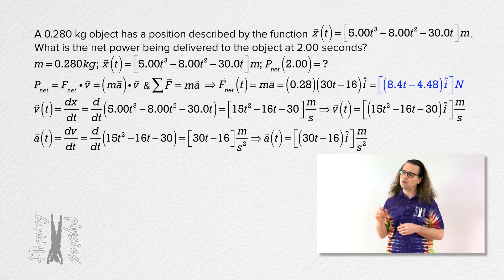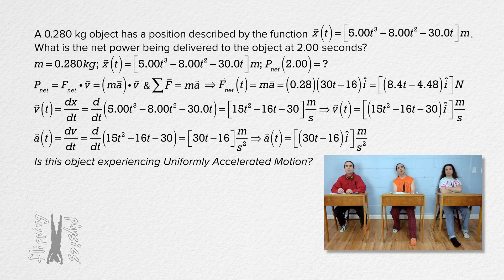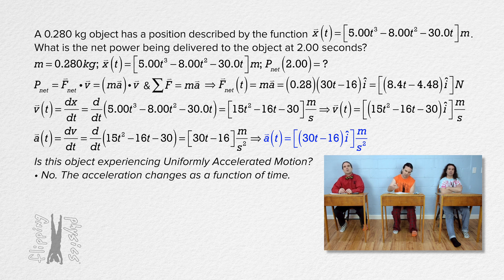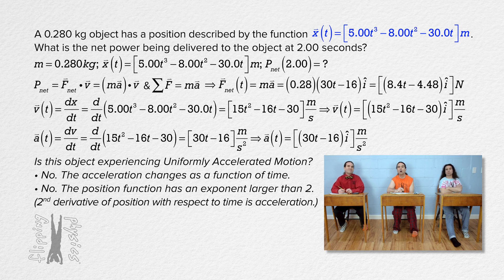Now a short detour. Bo, is this object experiencing uniformly accelerated motion? No — the acceleration changes as a function of time; it does not equal a constant number. Actually, we can tell that the object is not experiencing uniformly accelerated motion from the position equation because its largest exponent is more than 2. Acceleration is the second derivative of position with respect to time, so because the largest exponent in the position equation is more than 2, it is not constant acceleration.